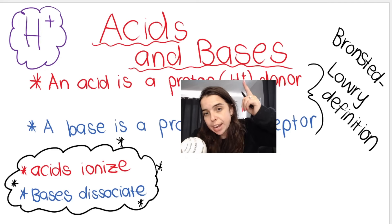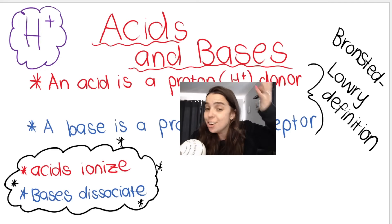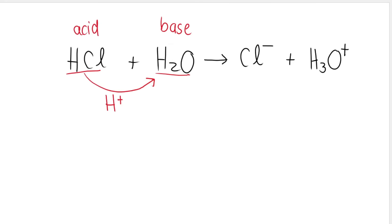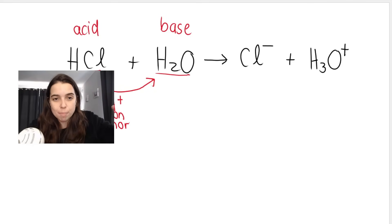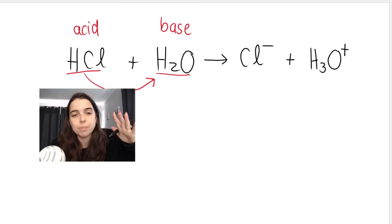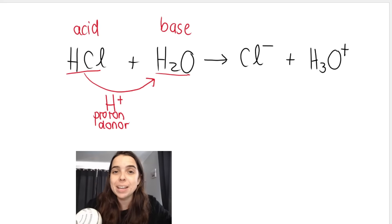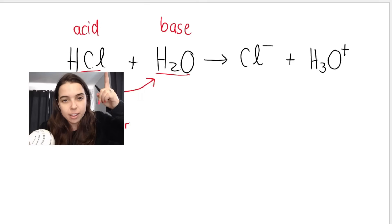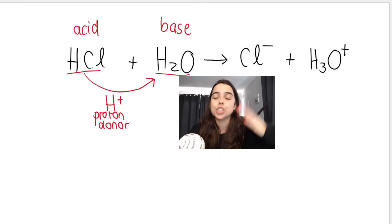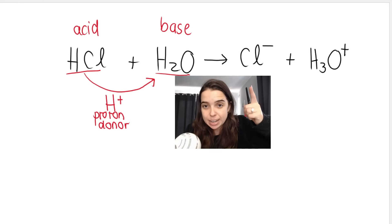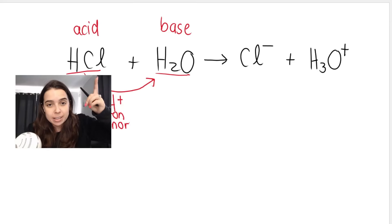So essentially, my acid is the proton donor. It's giving away this proton to H2O which is my base. HCl was a neutral compound, no charges, just HCl. When it gives away a positive, if you're neutral and you give away a positive, you become negative. That is why HCl becomes Cl-. The H is gone. It was neutral, it now becomes negative. That is what happened to the acid, it became Cl-.